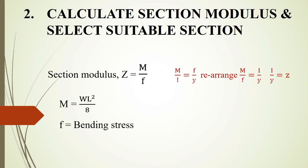The second step is to calculate the section modulus and select the suitable section. The section modulus is Z, where Z equals M divided by f — M is the bending moment and f is the bending stress. From the flexure formula M/I = F/Y, or sigma/Y, we derive the section modulus.